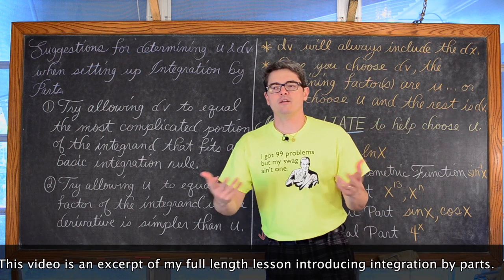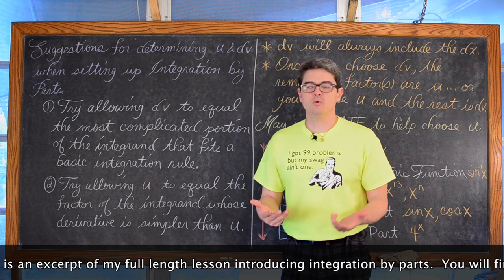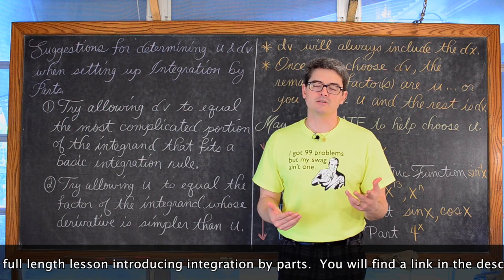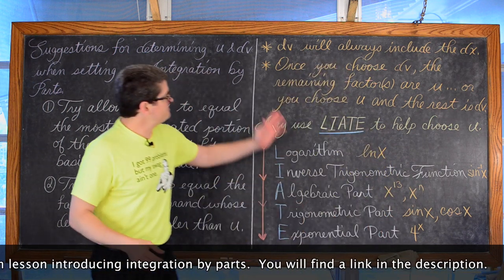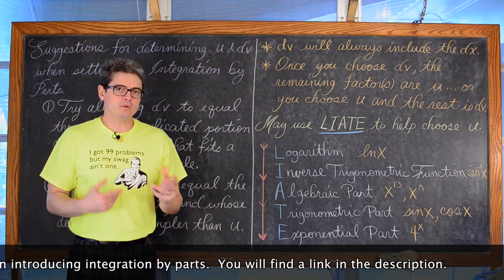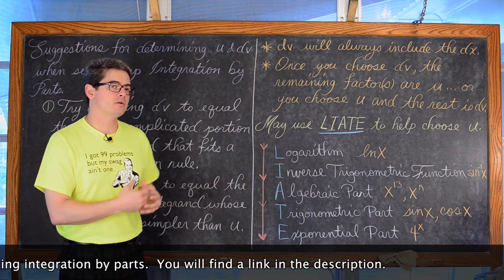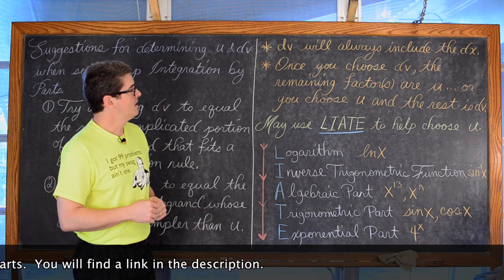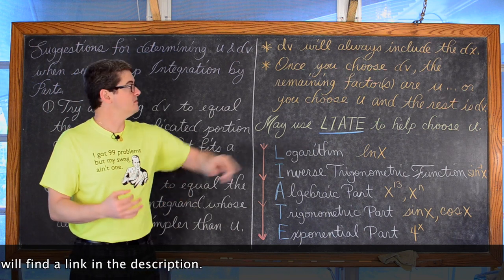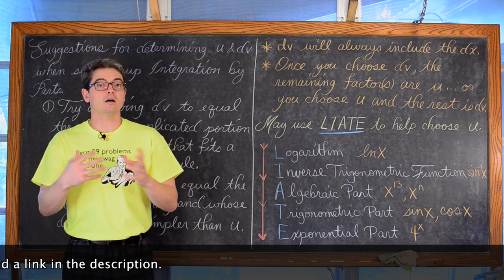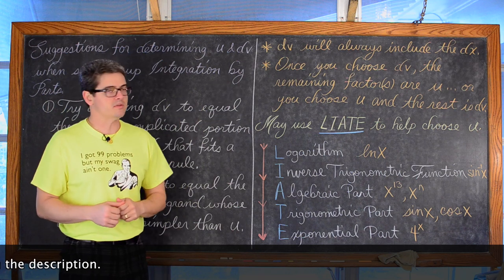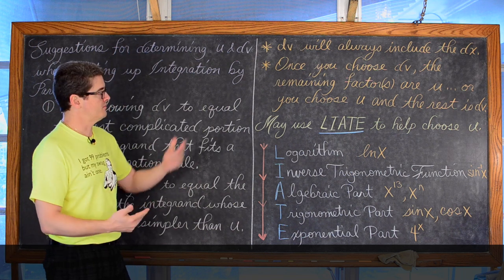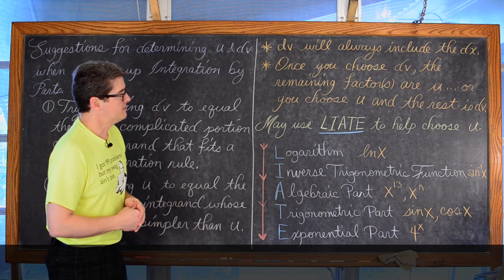If you had a factor like e to the 2x, you wouldn't want to allow that to be u, because the derivative of e to the 2x is 2 times e to the 2x — that is not simpler. When setting up your equations, dv will always include the dx, because you are going to have to integrate that equation to find v. Once you choose dv, the remaining factor or factors are u, or vice versa.